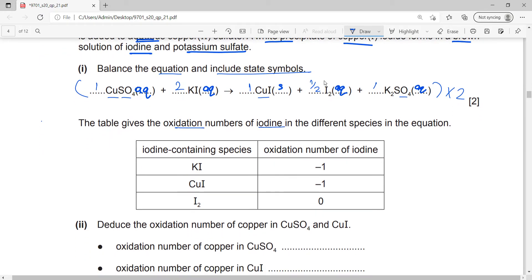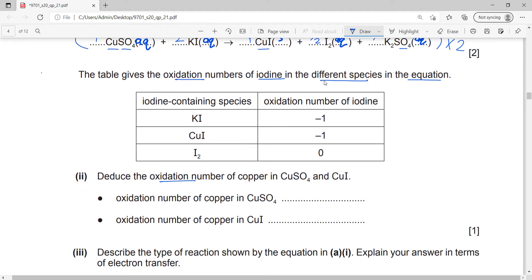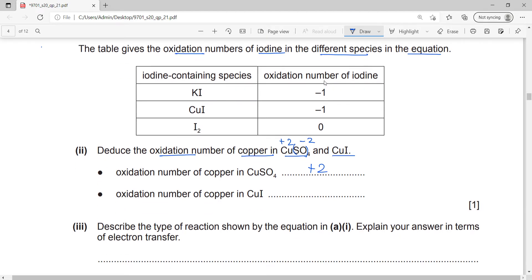The table gives the oxidation numbers of iodine in different species in the equation. They ask for the oxidation number of copper in CuSO4 and CuI. Sulfate is minus two, so copper in this would be plus two. The oxidation number of copper in CuI: iodine is minus one by the redox rules, so copper must be plus one.